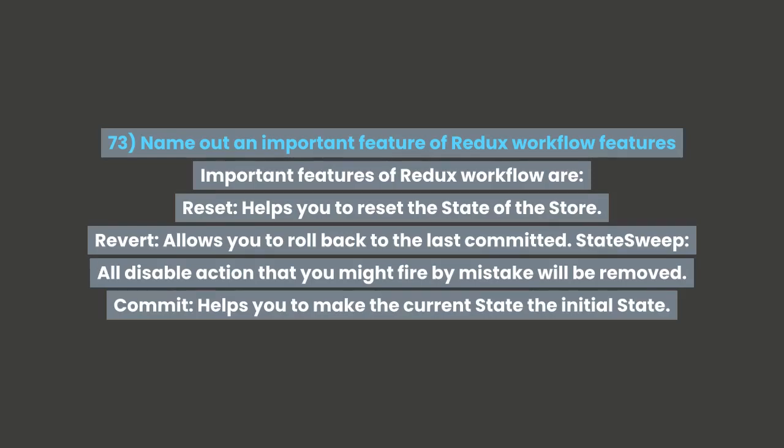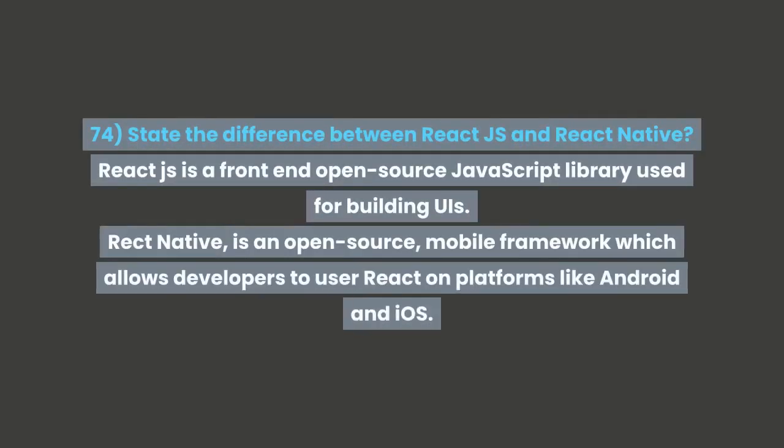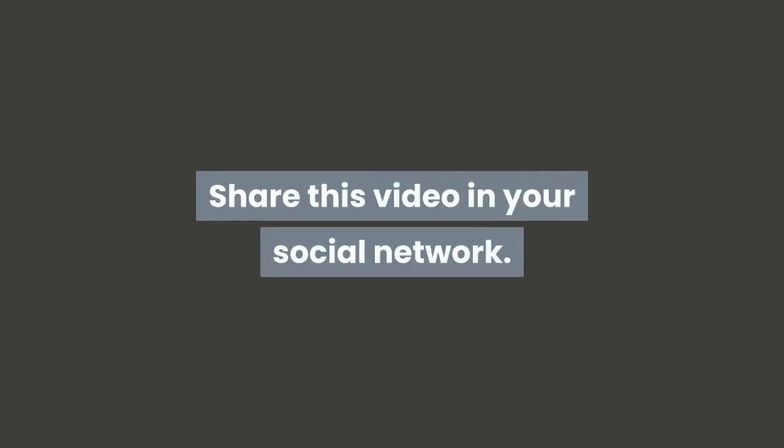Commit — helps you to make the current state the initial state. Question 74: State the difference between React.js and React Native. React.js is a front-end open source JavaScript library used for building UIs. React Native is an open source mobile framework which allows developers to use React on platforms like Android and iOS. Please subscribe to this YouTube channel, thank you for watching this video, and share this video on your social network.